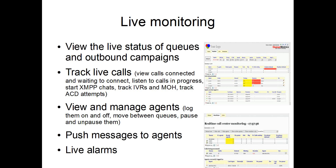The first thing Keymetrics does is show the live status of your call centers — the live status of queues and outbound campaigns you may be running. You can see live calls, not only which calls are connected to which agents, but which calls are waiting and how long they've been waiting. You can listen to calls in progress by clicking on them, chat with agents, see IVRs, music-on-hold codes depending on the Asterisk version, and see ACD attempts, which is very important for routing.